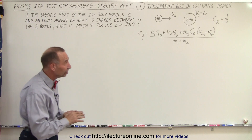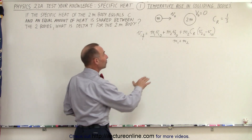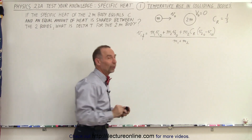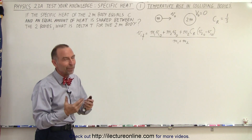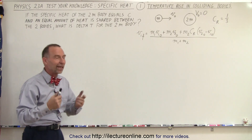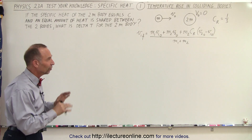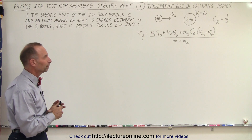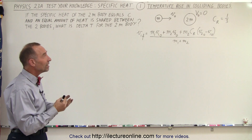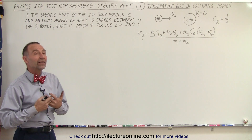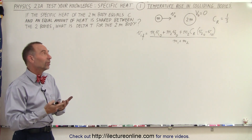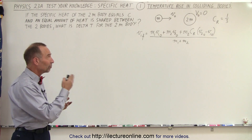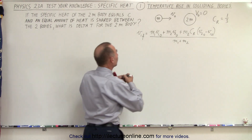Just to help us along, we have the coefficient of restitution equation that most of us don't remember right off hand, and that will kind of help us get started. So what that means is we need to find the final velocities of both objects — object 1 and object 2.